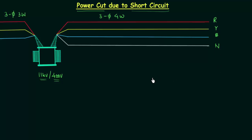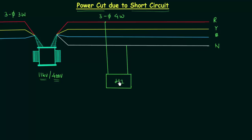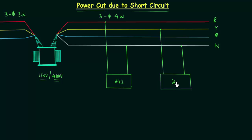We already know how the connection is made if we have to supply power to a house. Let's take two houses for our analysis. House H1 is connected between the red line and neutral. House H2 is connected between yellow and neutral.